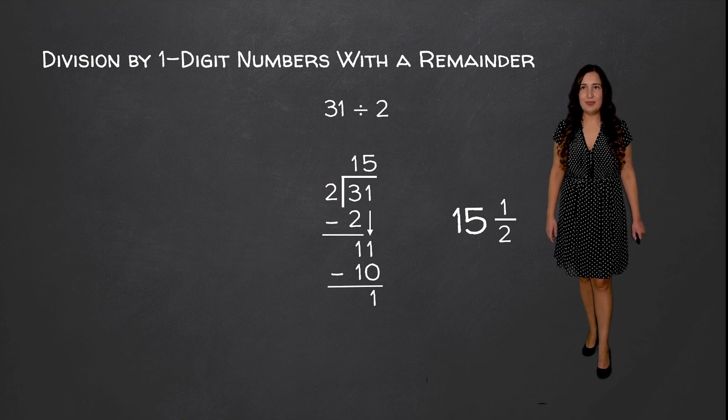Then we're going to bring down our next digit which is 3, and we need to see how many times 5 goes into 43. 5 goes into 43 8 times because 5 times 8 is equal to 40. We're going to write our 40 down here and subtract. 43 minus 40 is equal to 3. Because we've brought down all the digits, our remainder is going to be 3.